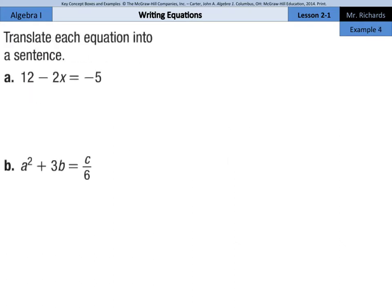Example 4 shows how to translate equations into verbal sentences. So, translate each equation into a sentence. We have 12 minus 2x equals negative 5. Well, let's just write that. 12 minus, to cover the subtraction, we'll then write 2 times x.